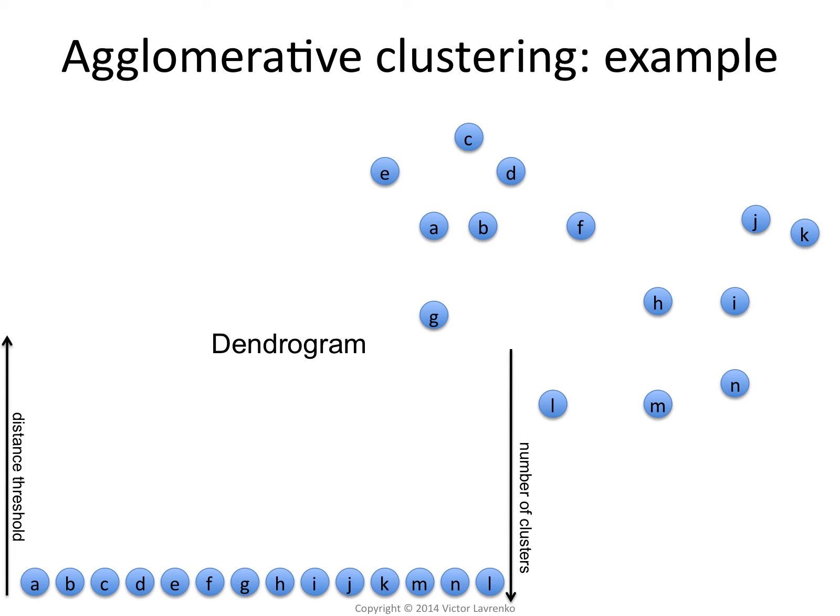So let's look at an example of this. Suppose this is my data set, the points scattered in two-dimensional space.